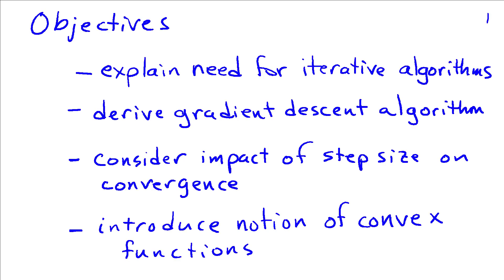We'll begin by explaining the role and importance of iterative algorithms in machine learning. We'll then derive a gradient descent algorithm for solving the least squares problem, consider the impact of the step size we choose on the convergence of the algorithm, and then introduce the notion of convex functions, which will play an important role in understanding convergence, especially for extensions of the initial approach we're going to look at here.